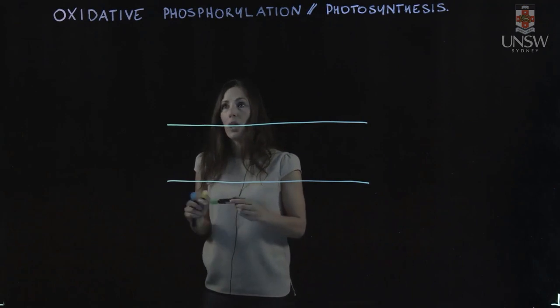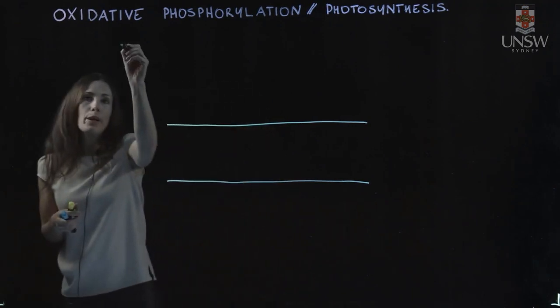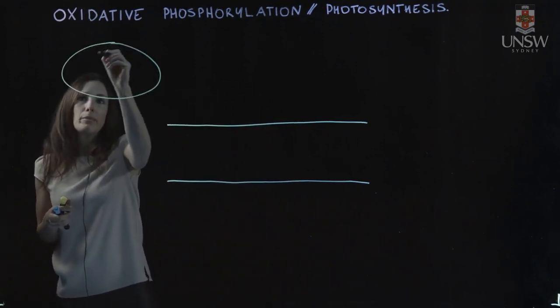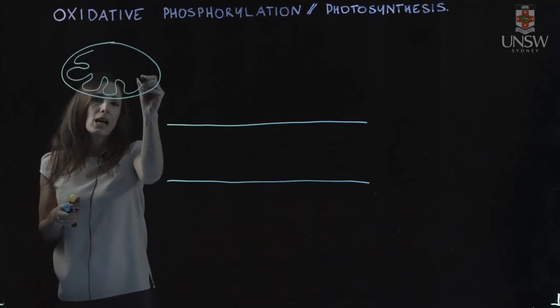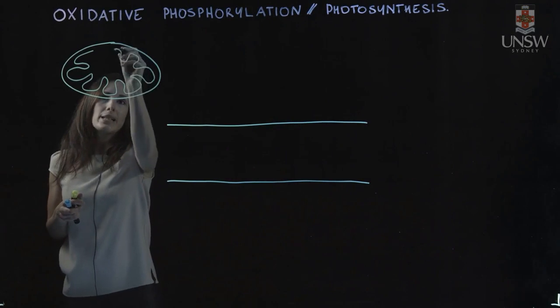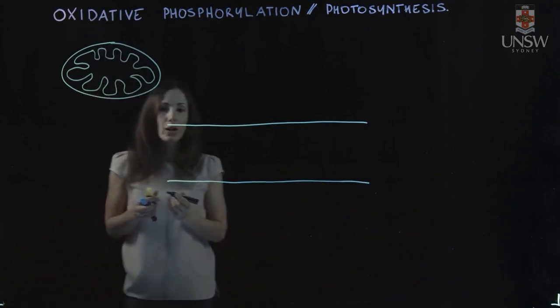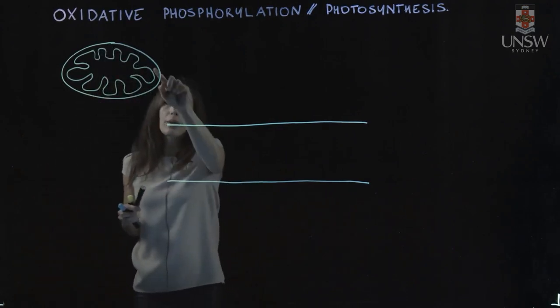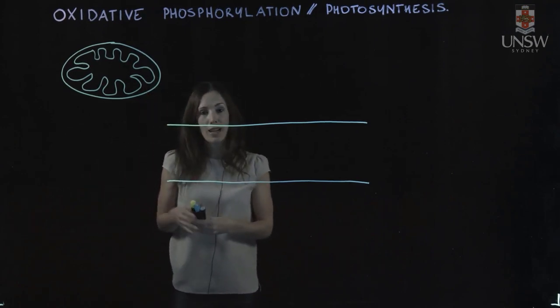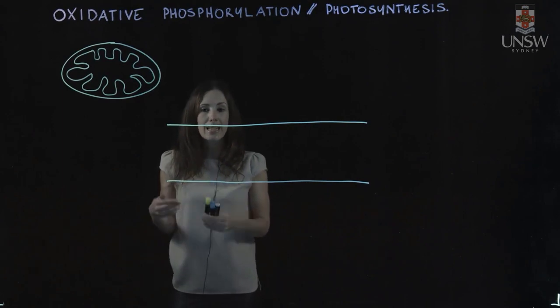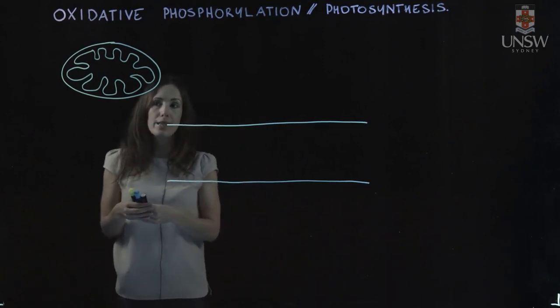So in a mitochondria, we have two membranes. Remember, we have an outer membrane and our inner membrane has these cristi, and that maximizes the surface area of the mitochondria, because it's on this inner mitochondrial membrane where oxidative phosphorylation occurs, and that's really important to get ATP, which is the currency for cells.